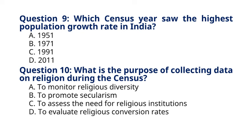Question 10: What is the purpose of collecting data on religion during the census? A. To monitor religious diversity. B. To promote secularism. C. To assist the need for religious institutions. D. To evaluate religious conversion rates. The correct answer to question 10 is option A: To monitor religious diversity. Explanation: Data on religion helps in monitoring the religious diversity of the population.